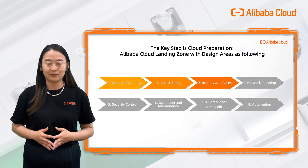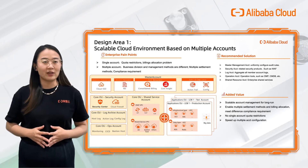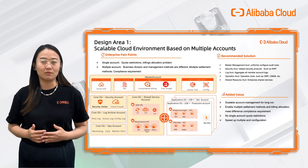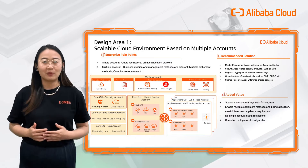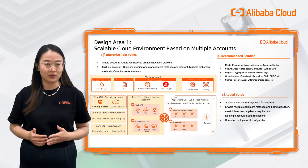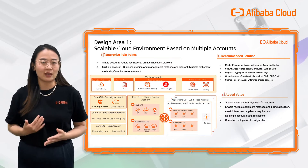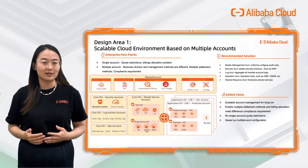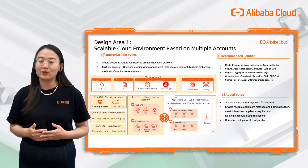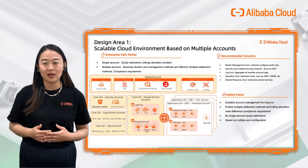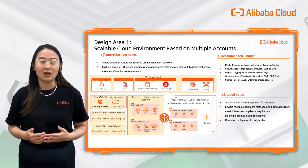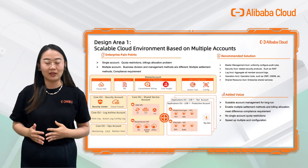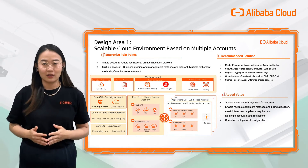Medium to large enterprises often create multiple accounts to fit their organizational needs and to manage and govern their resources, billing, settlement, and allocation. Security and compliance issues may arise due to lack of comprehensive design. Here is a typical architecture design recommended for an enterprise, which includes a master account used for finance and billing control and unified audit rule settings, as well as a central operations and maintenance account, a security account, and a production account.